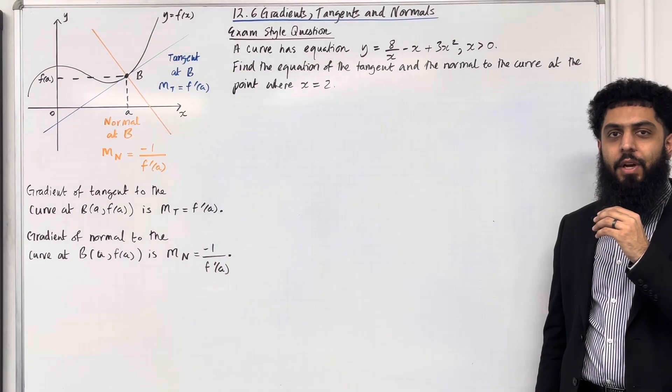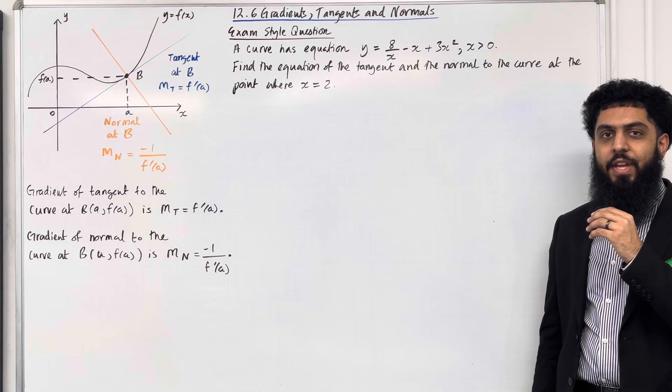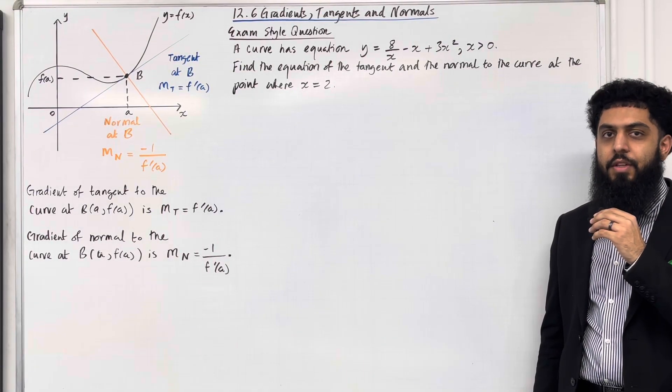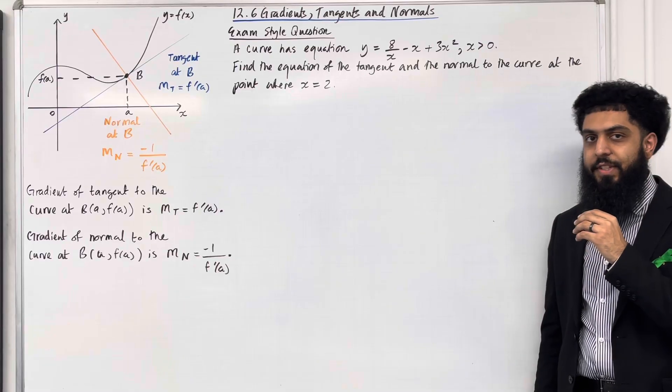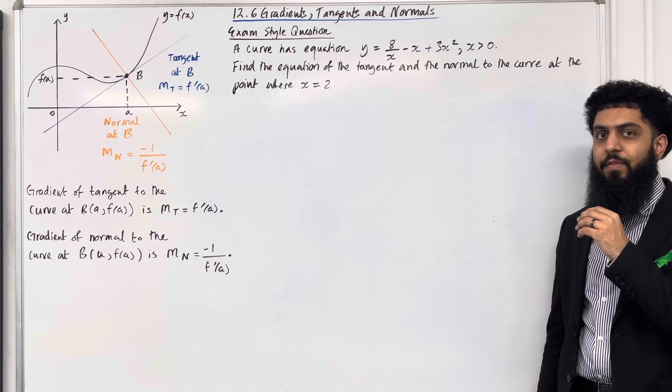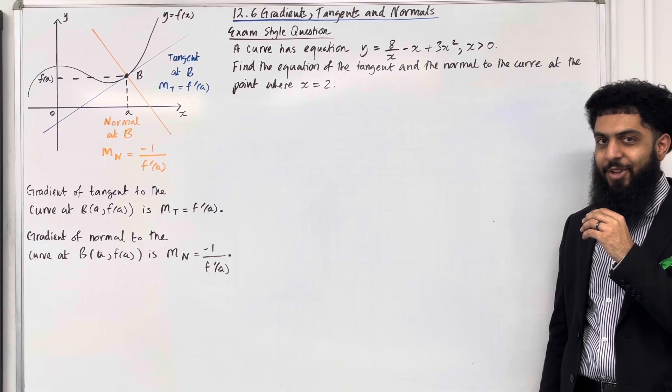Welcome back. In this teaching video, I'm looking at 12.6 gradients, tangents and normals. 12.6 represents chapter 12, section 6 of the Pearson A-level maths, pure maths year 1 textbook.